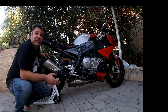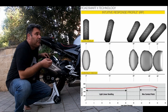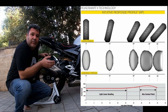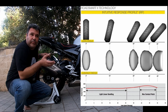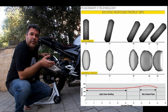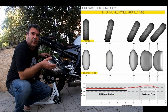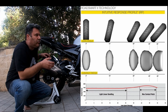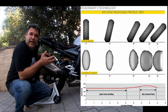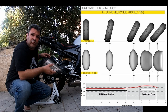So as you can see in this diagram, the more you lean, the more contact patch and grip you have. So don't be afraid to lean. Be afraid to brake, because when you brake, you transfer weight forward and then you're at risk of losing grip.